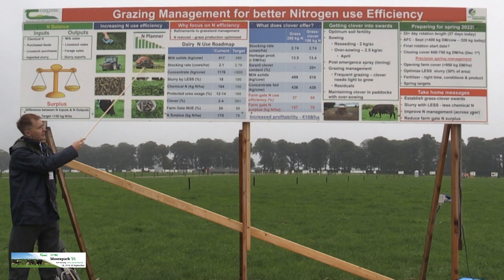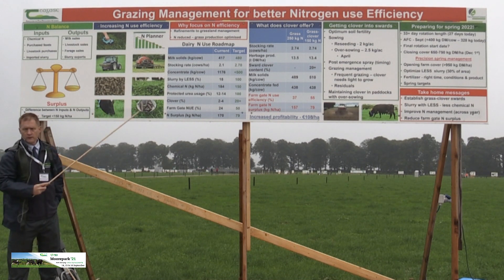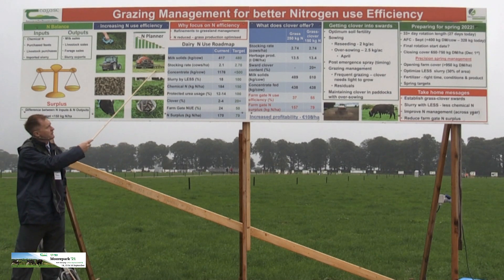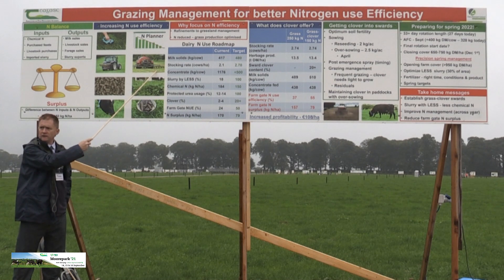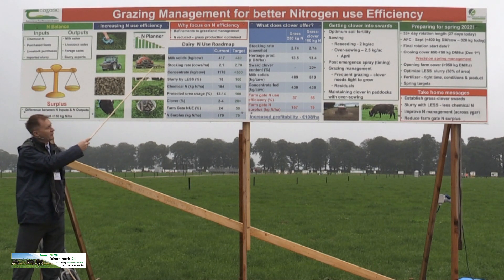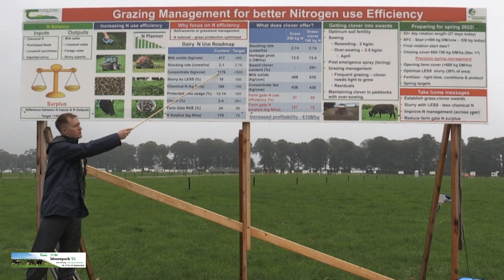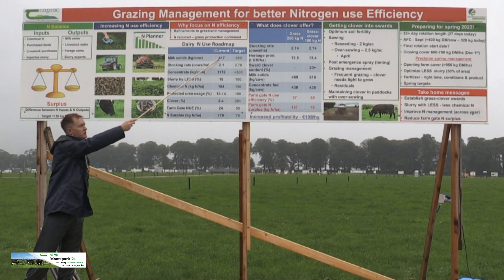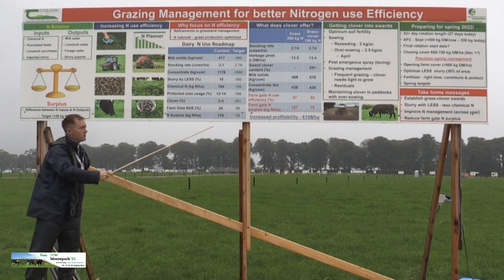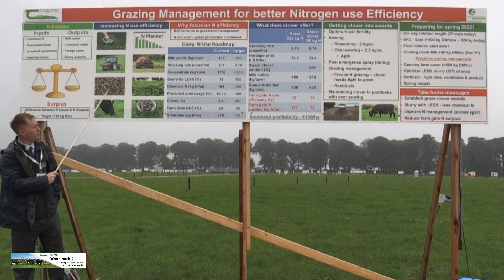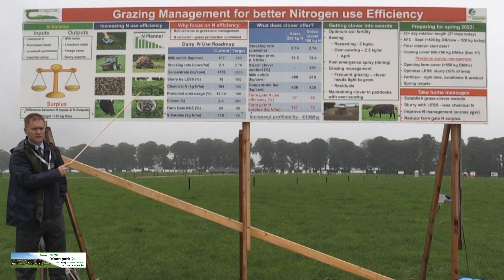There's a lot of good work showing the efficiency gains from trailing shoe and dribble bar slurry application. Many of you in the last two years have invested in buying these, and if you have, your nitrogen bill for the farm should be coming down — you shouldn't have the same nitrogen bill as when you didn't have a trailing shoe or dribble bar. On concentrate, the average cow in the country is eating about 200 kilos of concentrate and she's not producing exceptional milk solids.